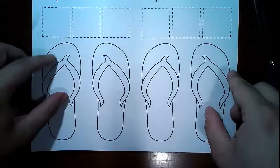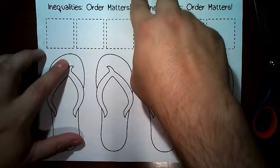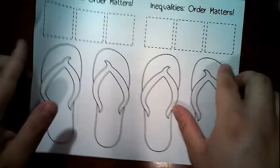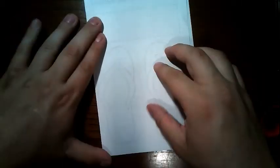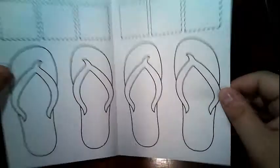The other one is the flip-flop foldable. You have two of these per page and you only need one, so go ahead and cut down the middle. If you want, fold it first so you can get a nice straight line, and then cut right down the middle.